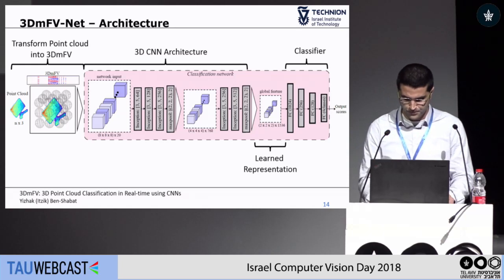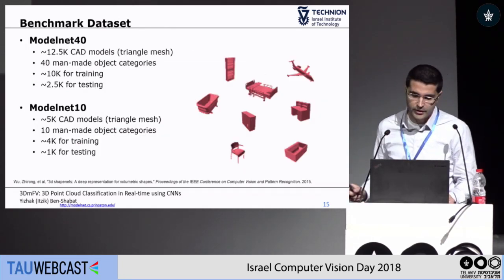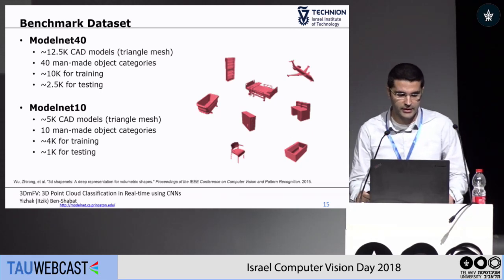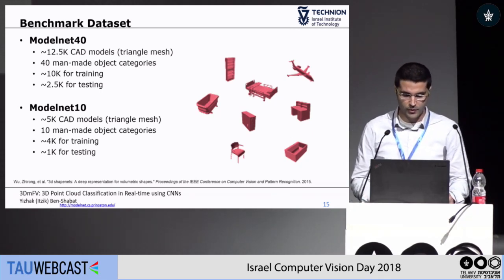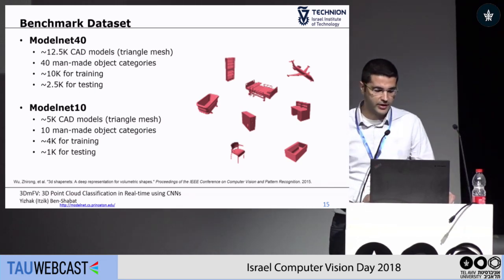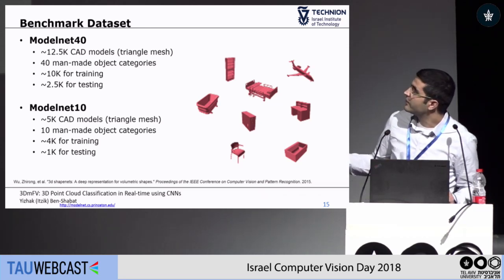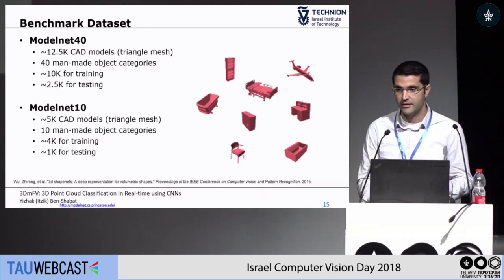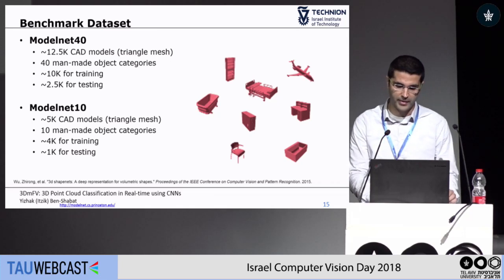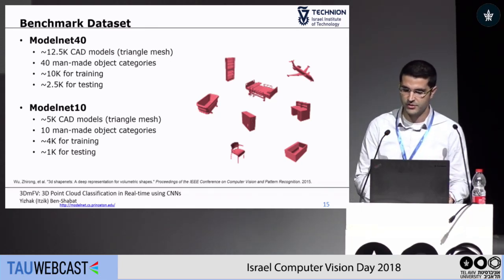We tested our method on benchmark datasets including ModelNet40 and ModelNet10. It's a challenging dataset composed mostly of CAD models, with 40 man-made object categories for ModelNet40. We used approximately 10,000 samples for training and 2,500 for testing. The data is given as triangle meshes, but we sample points on the mesh and introduce data augmentation such as noise and rotations.